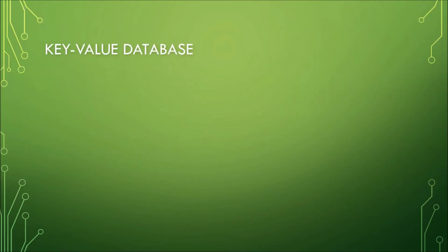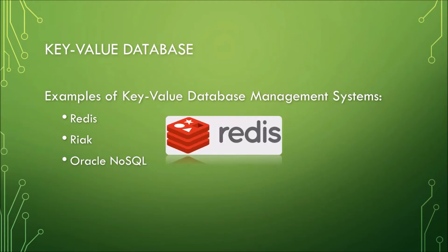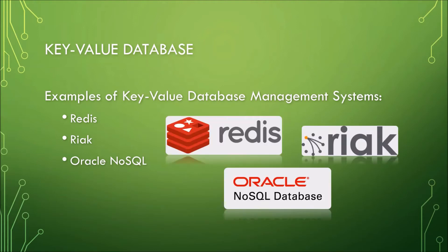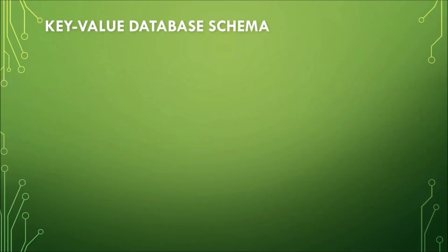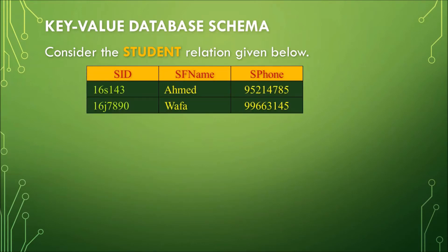Here are some examples of key-value database management systems: we have Redis, Riak, and Oracle NoSQL, among others. Now, how do we make a schema for a key-value database? Consider the student relation given here — this is a student table with three columns or attributes, and two rows or records: one for a student named Amed and one for a student named Wafa.